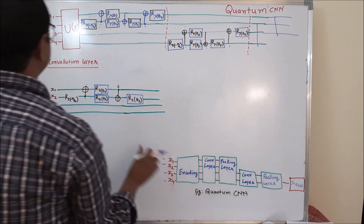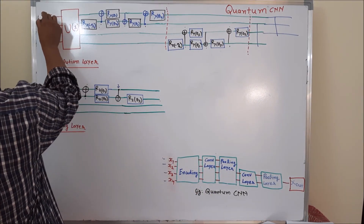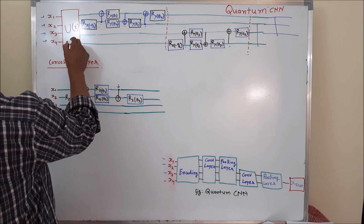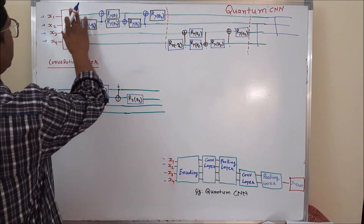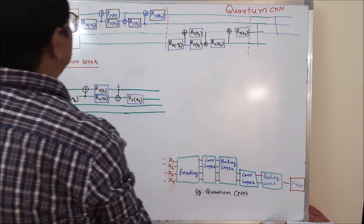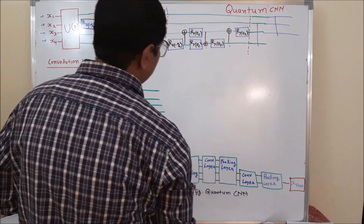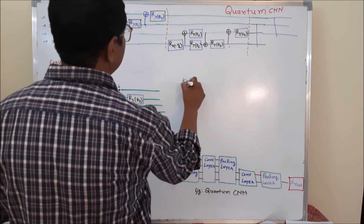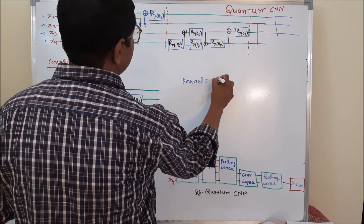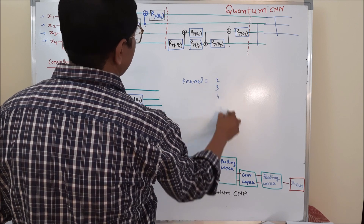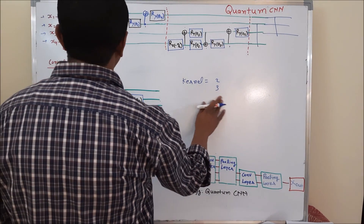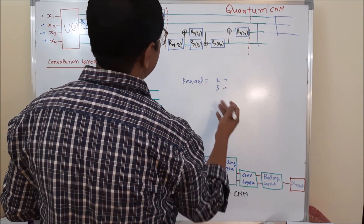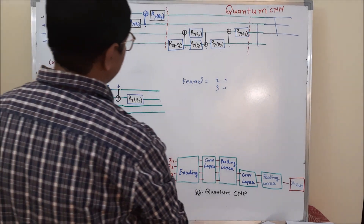In this part of the tutorial, I am assuming that you have used the external 4-qubit input, passed those inputs to the encoding system, and the encoding system generated the output. Now we will add some convolution layer. So how to add the convolution layer? For that we pick some kernel of size 2, 3, 4, and so on based on the requirements. But here, as we have just 4 qubits, I found that 2 and 3 will be the better choice.